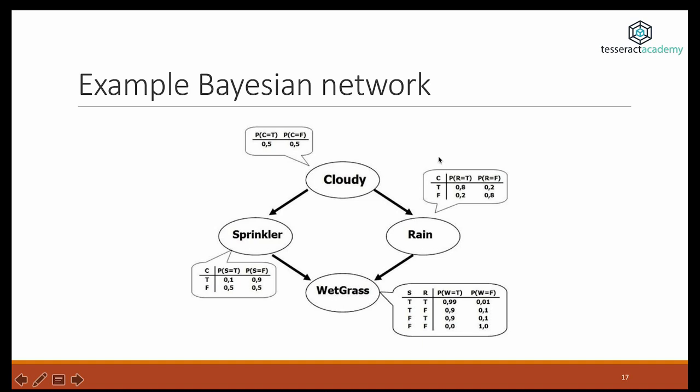For each node, we have a table of probabilities and each node can be true or false with different probabilities. So cloudy, 50% probability true, 50% probability false. Then rain is affected by the state of cloudy. We can see that if cloudy is true, then the probability of rain is 0.8, whereas if cloudy is false, then the probability of rain is lower, it's 0.2.